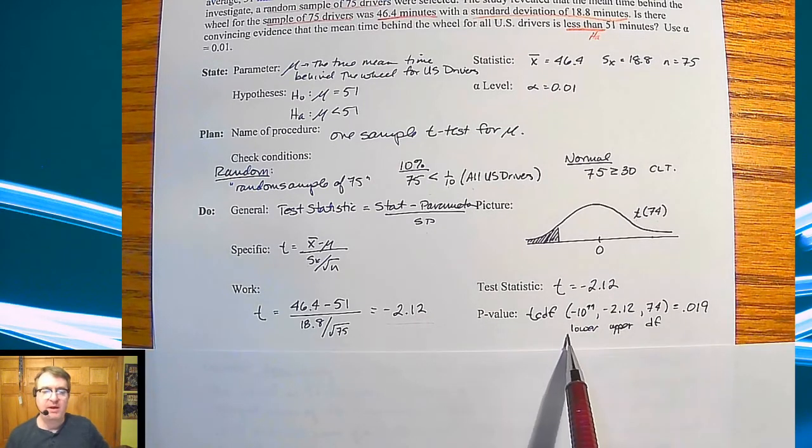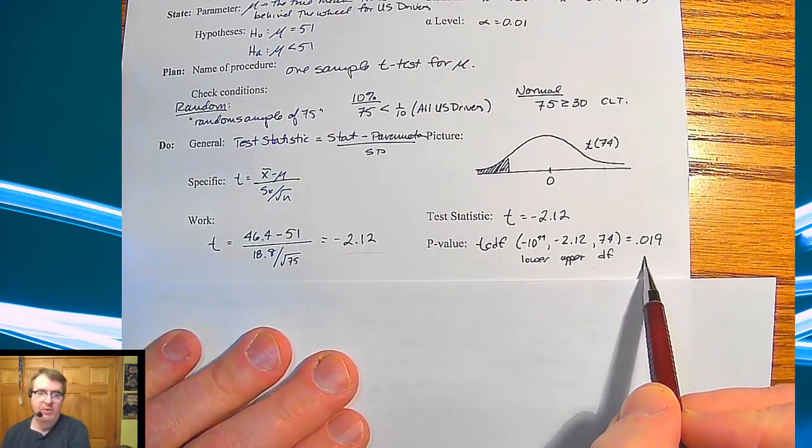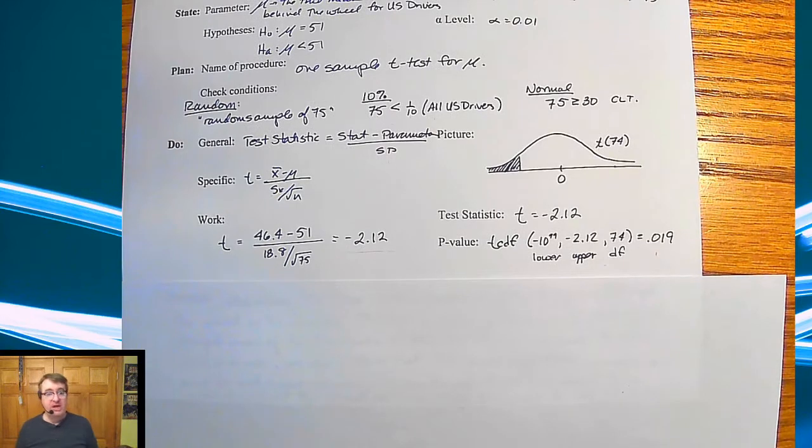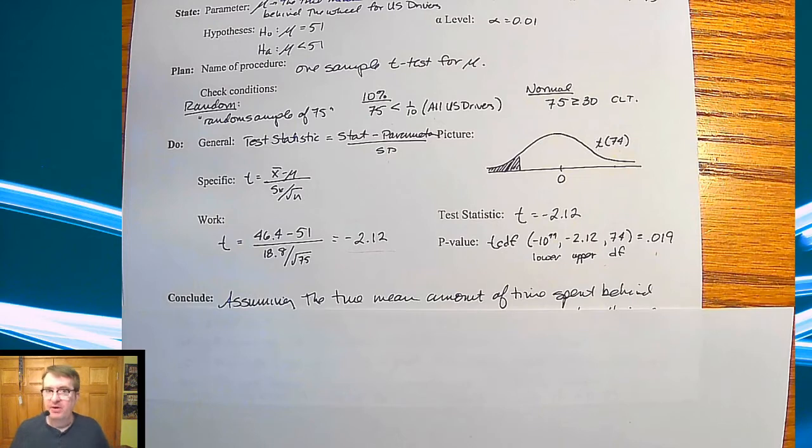I throw it into my calculator, TCDF, label out all the different parts, and I get 0.019. So about 2% chance of what I'm seeing is actually happening. Now, remember, alpha value is 1%. And we're going to talk about changing things a little bit tomorrow.